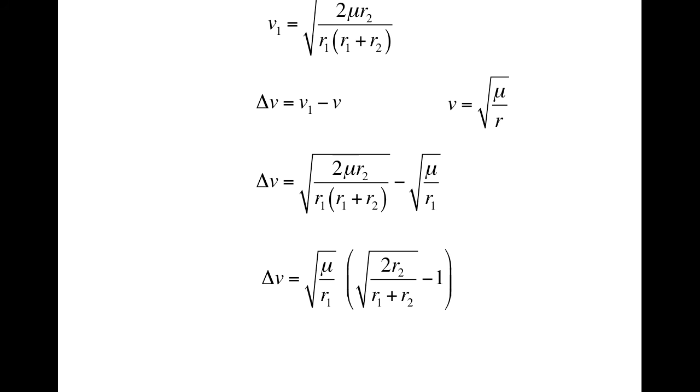Anyway, substituting in, we get the following formula for delta-v. Note there is a mu over R1 in each square root, so it can be taken out finally yielding this formula. Phew, this is it. This will calculate the delta-v required for the first burn of any Hohmann transfer. Let's put it to the test.